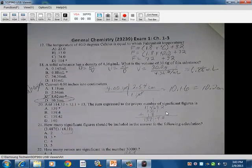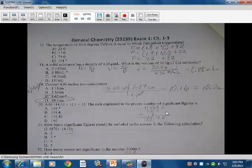17. We have the temperature of 40 degrees Celsius is equal to which Fahrenheit temperature? So we know that Fahrenheit equals 1.8 times the degrees Celsius. Do that first, then you add 32 to it. So we have Fahrenheit equals 1.8 times 40 plus the 32. So we have 72 plus 32. So we have 104 D as the answer there.